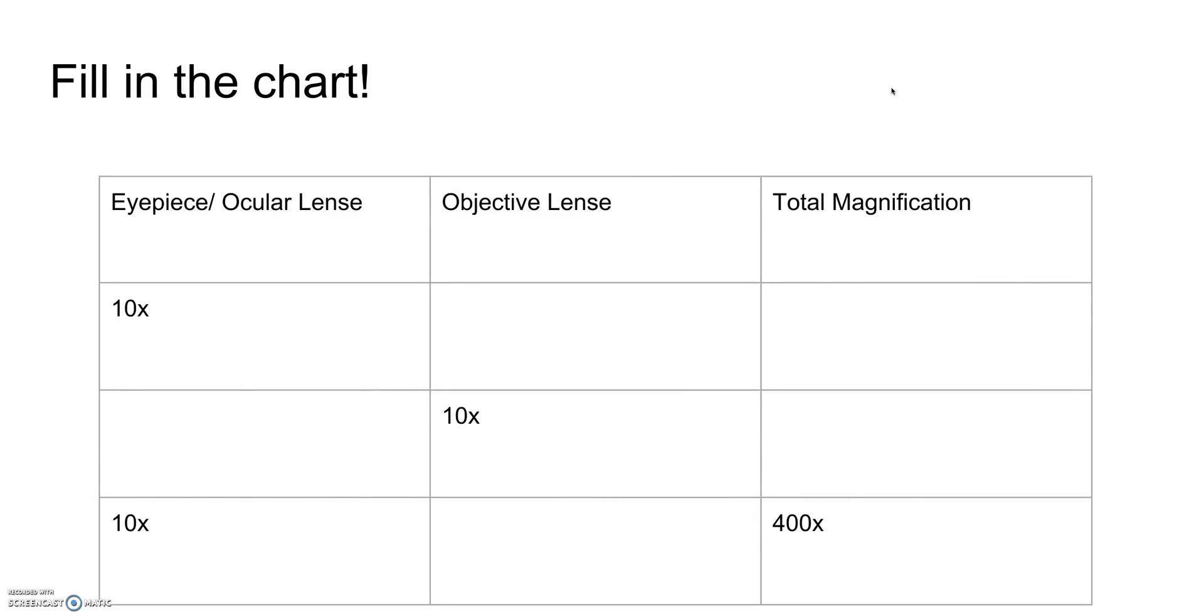Now for the test, you're going to have a microscope with different magnifications, different numbers. The idea is they want to make sure you know what to do. You multiply the highest number of the objective lens to the eyepiece, however much the eyepiece is. Now this chart just helps to emphasize what total magnification is. 10 times 4, smallest, that's 40. And the eyepiece always stays the same. 10 times 10 is 100 for the middle, medium size. And 10 times 40 is 400 for the maximum increase of total magnification.